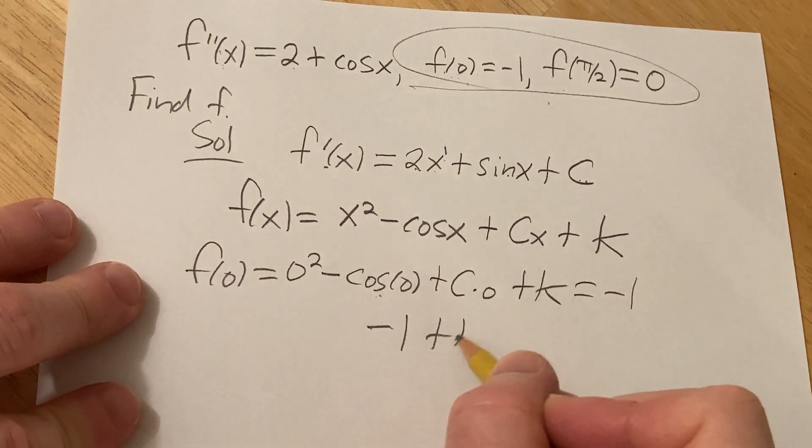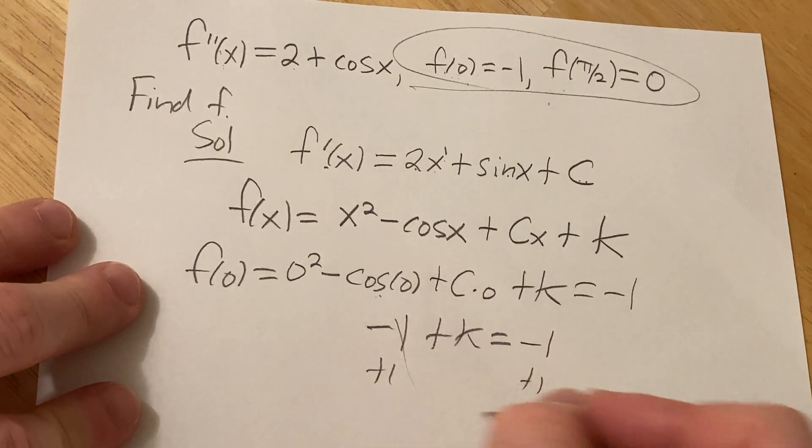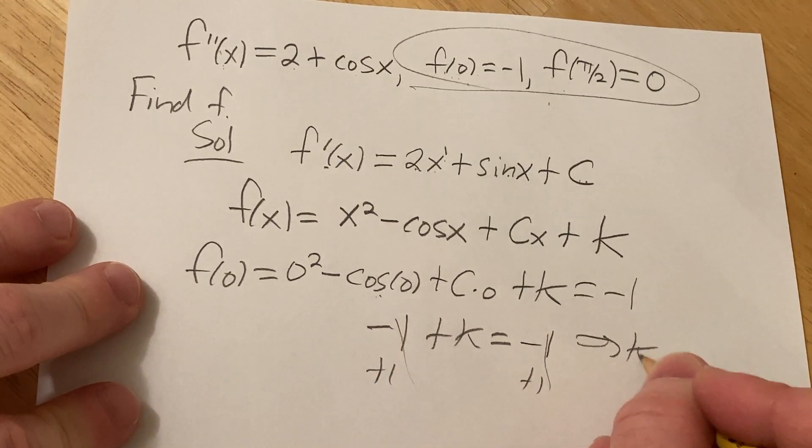Cosine of 0 is 1. So, this will be negative 1 plus k equals negative 1. Oh, that's interesting. Plus 1 plus 1. k is 0. So, that's pretty cool.